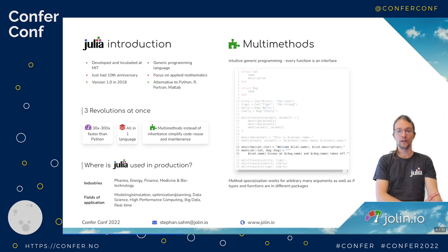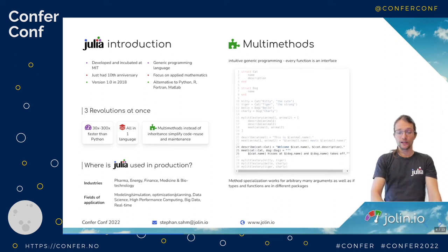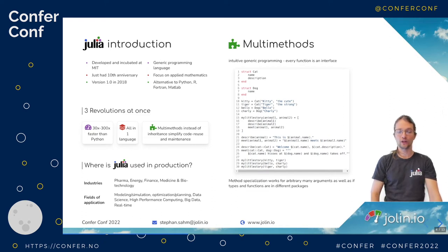Here we specialize for cats: we have a special description for our cat that uses the cat.description field. And if a cat and a dog meet, we also put a special string there. This works for arbitrarily many arguments, and also for functions and types in different packages. So it's really an interface you can use to structure your code, structure your packages and your application. Very intuitive, very easy, and it also brings benefits in accelerating your code.